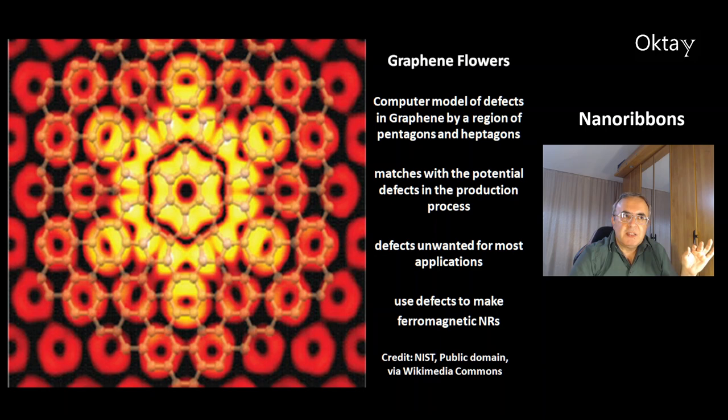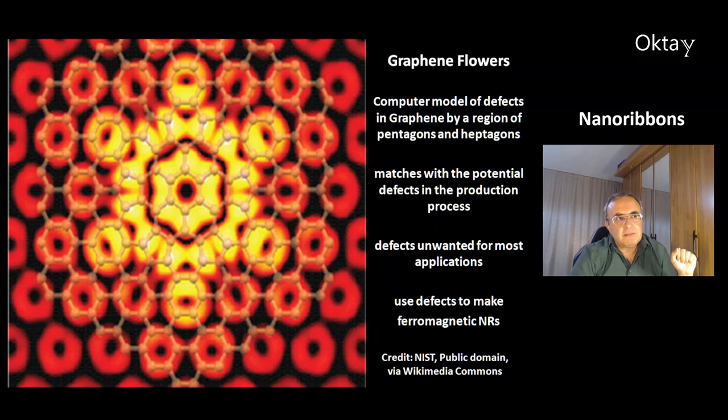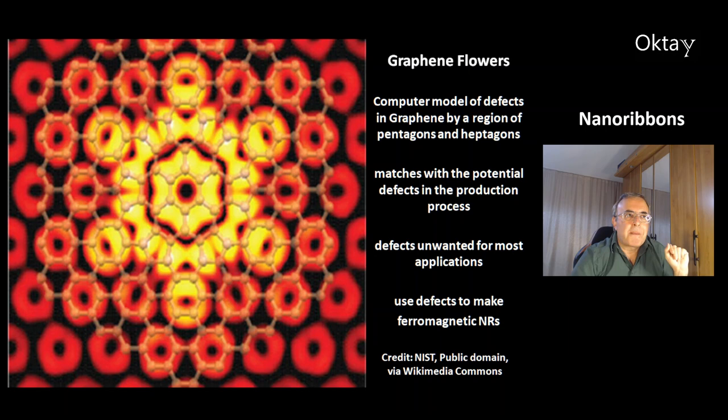This is a picture of graphene flowers — a computer model of defects in graphene formed by regions of pentagons and heptagons instead of hexagons. This computer model nicely matches potential defects in the production process. For most applications you don't want defects, but you can take advantage of them to make ferromagnetic nanoribbons.